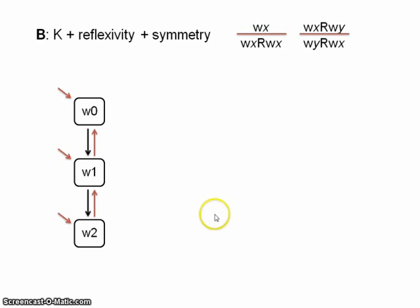And say if we drew another world, W3, from W1, well, again, we just have reflexivity, it accesses itself, and it accesses W1. It's nothing too complicated, I don't think, any of that.